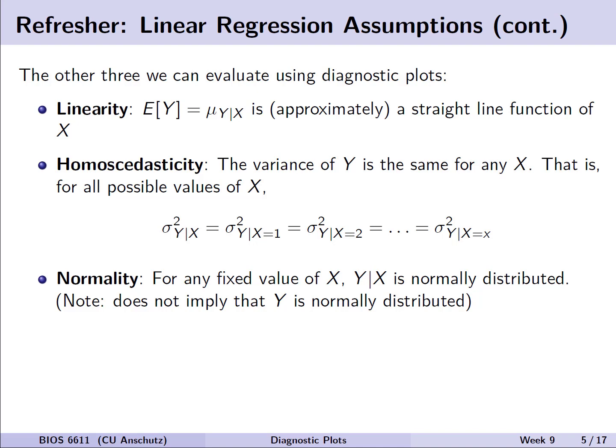That is, for all possible values of x, they're all equal to each other regardless of whether x equals 1, 2, or some arbitrary value within our possible range of values. Finally, we have our assumption of normality — that for any fixed value of x, y given x will be normally distributed.